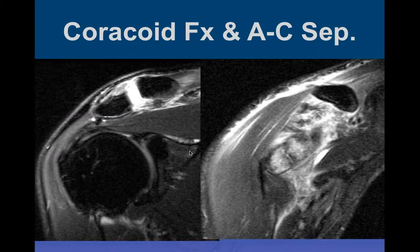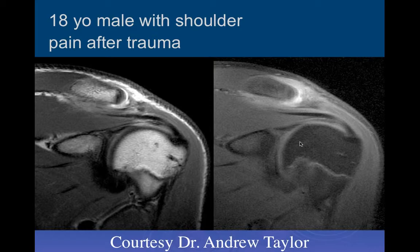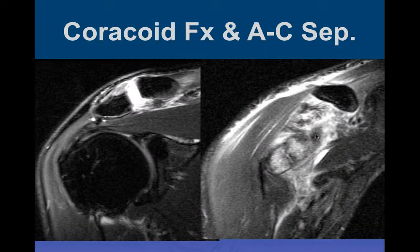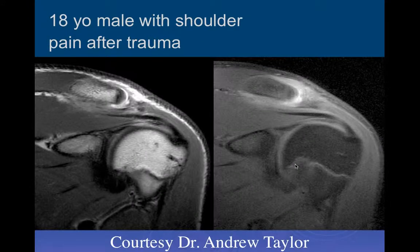Here's another case with AC joint separation and inferior displacement of the coracoid process, but in addition to the torn CC ligaments, there was an actual fracture of the coracoid process, which complicated treatment.